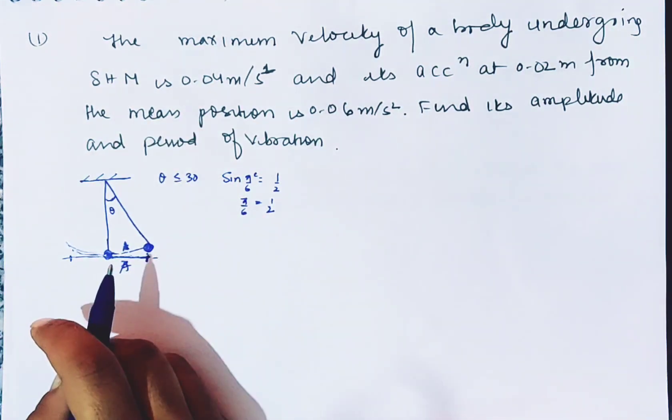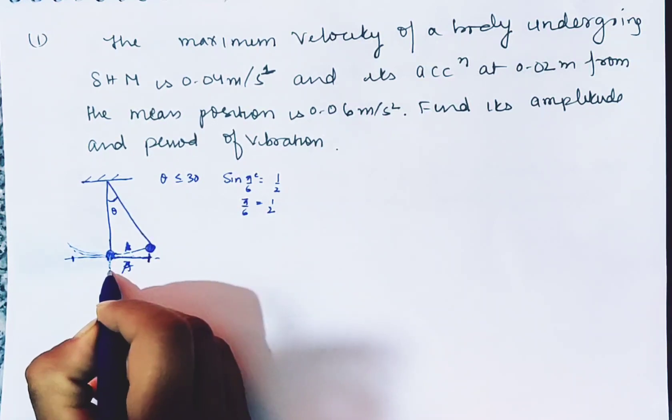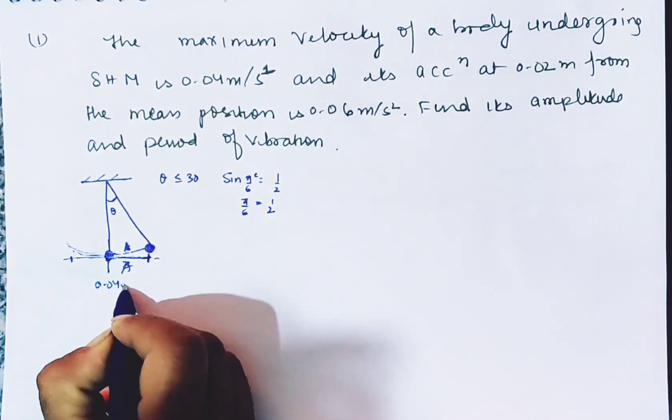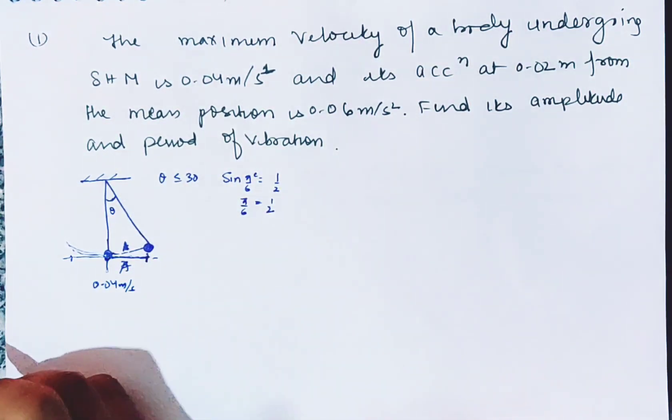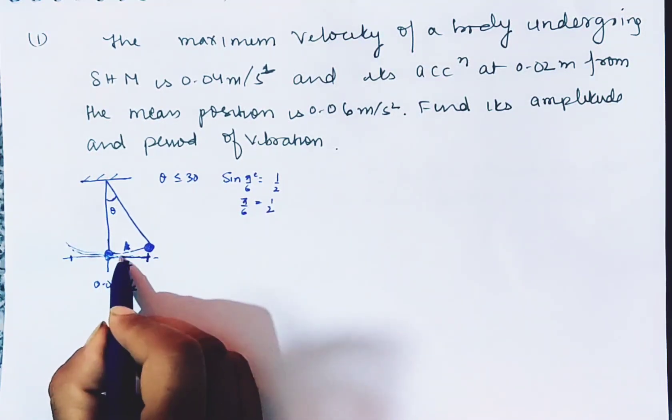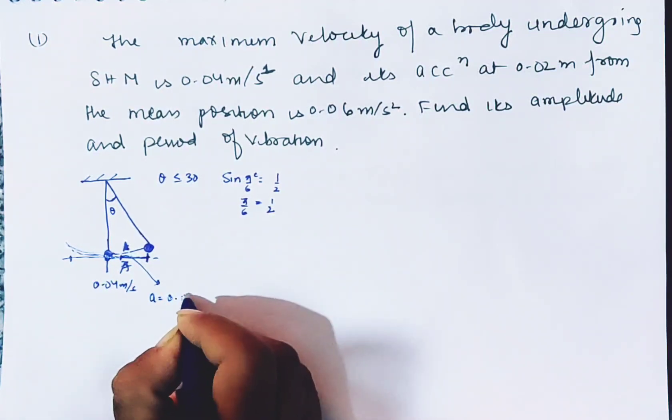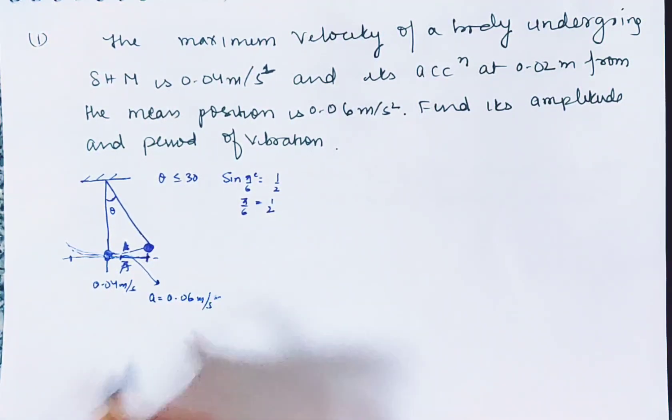Maximum velocity of the body when the pendulum is here, maximum velocity is 0.04 meter per second, and the acceleration at 0.02 meter from mean position is 0.06 meter per second. So this is the data given.